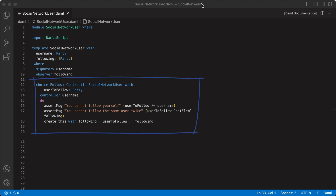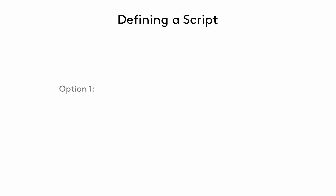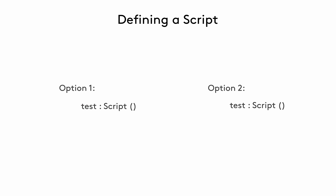Let's write our first test script to see if we can indeed create contracts and have users follow each other. We can write our script in the same file under where the template ends. There are two ways to define the scope of test scripts. First, we define the signature of our test by writing test colon script with empty parentheses.